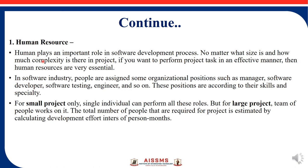The first resource type is human resources. Humans play an important role in the software development process. No matter what the size or complexity of the project, if you want to perform project tasks in an effective manner, then human resources are very essential.